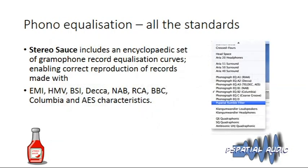Stereo Source implements an encyclopedic set of curves: EMI, HMV, BSI, DECCA, NAB, RCA, BBC, Columbia, AES, and others including course-groove and several 78 characteristics. As part of the help files, there's a big spreadsheet explaining which label should use which equalization. It's quite surprising how much livelier and more realistic these records sound when you re-equalize them correctly having always listened to them in RIAA.